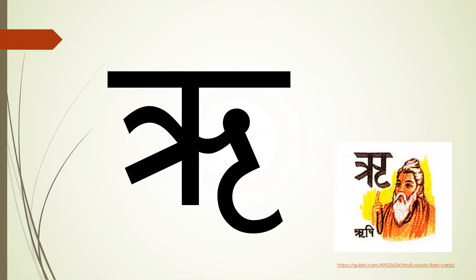We did till letter u which is bada u. Our next letter is ri. Ri se rishi. Rishi hota hai wise person or a sane person. So you will say ri se rishi. Speak with me: ri, ri, ri, ri se rishi.